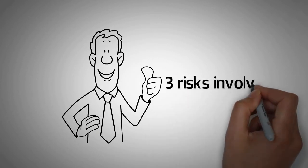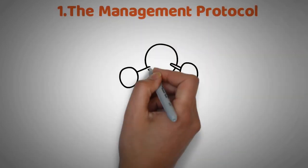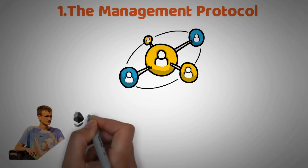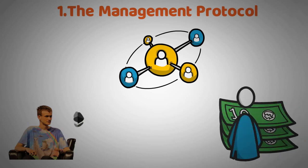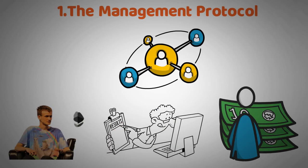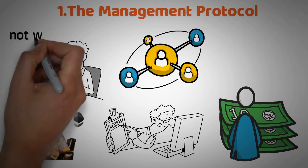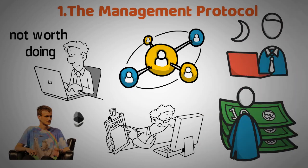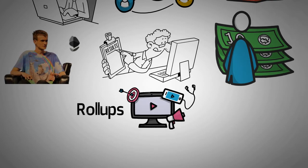Now let's talk about the three risks involved. The first one is a management protocol. Having shards is a great idea, but we still need management protocols to keep them working and running efficiently. In the words of Vitalik Buterin, this protocol is a logic that checks and manages shards, but if there are too many of them, this becomes expensive. This is generally a problem with all scaling solutions — the more you scale, the more you need to spend on the protocols that keep everything running smoothly. There is a risk that these costs could outweigh the benefits of sharding and make it not worth doing. To mitigate this risk, Buterin has proposed roll-ups to help keep things running smoothly.